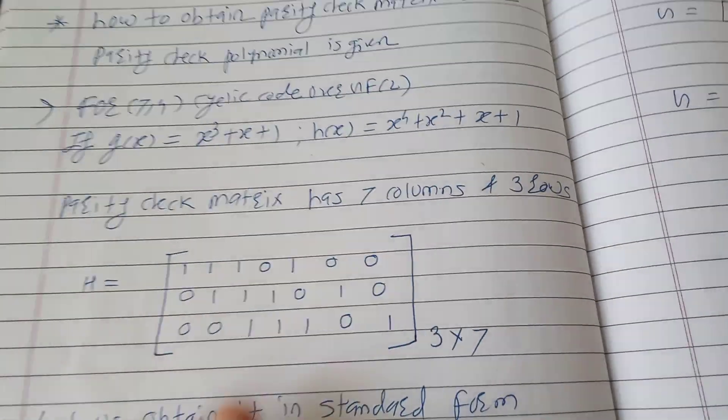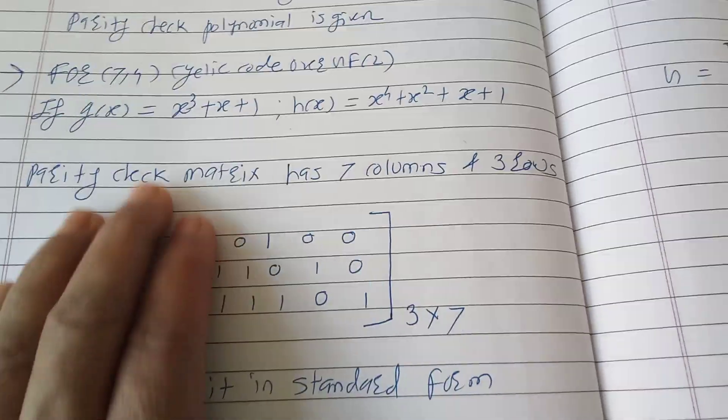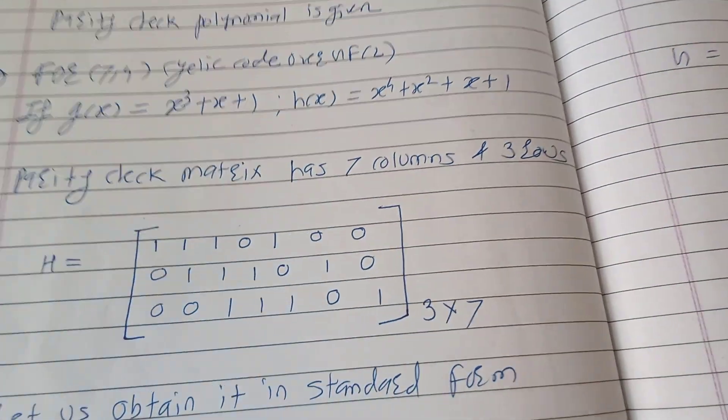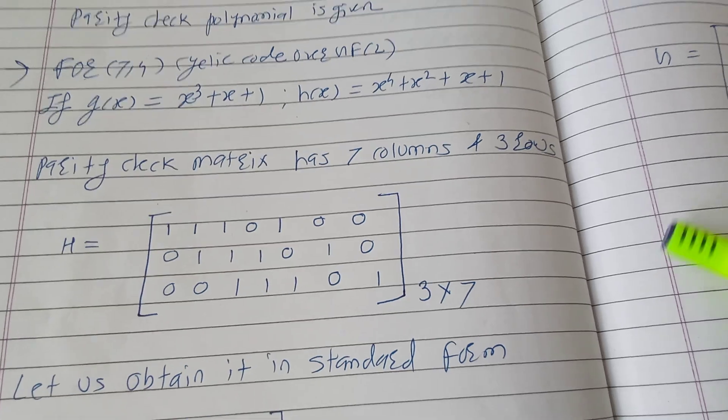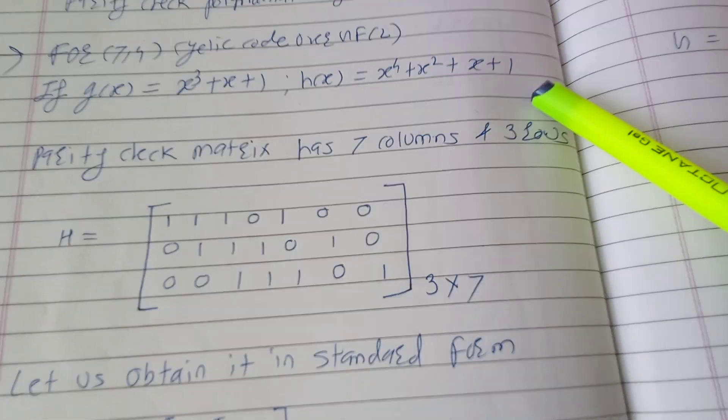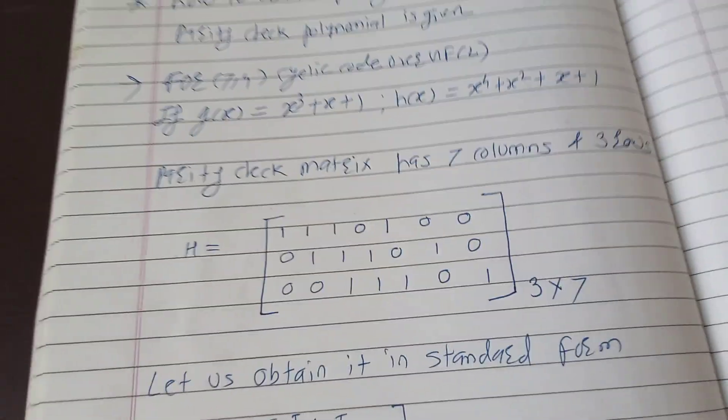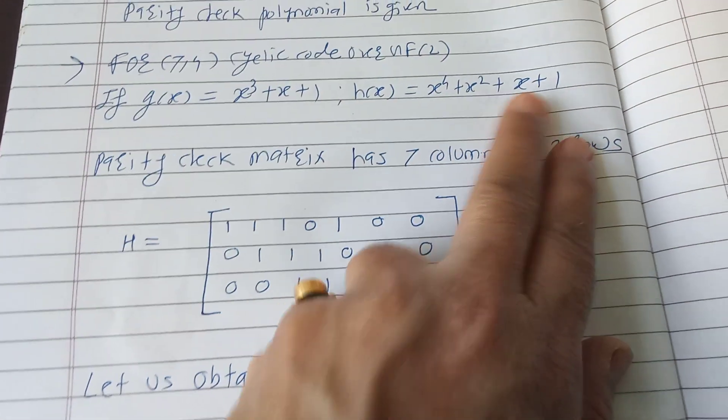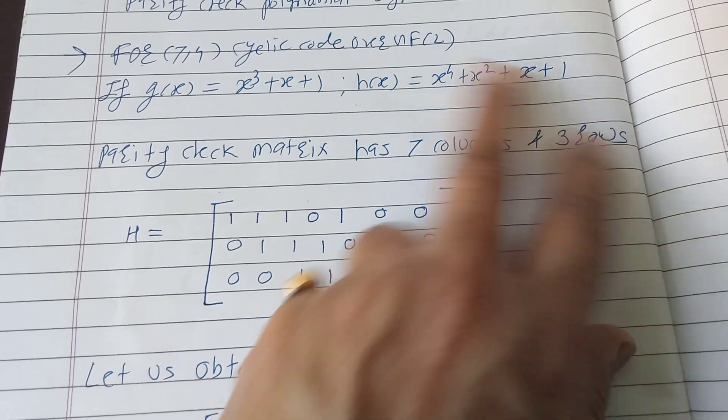Let us see how to obtain parity check matrix when parity check polynomial is given. For (7,4) cyclic code, if G(X) is X³ + X + 1 and H(X) is equal to X⁴ + X² + X + 1, then parity check matrix we are going to obtain from this polynomial X⁴ + X² + X + 1.